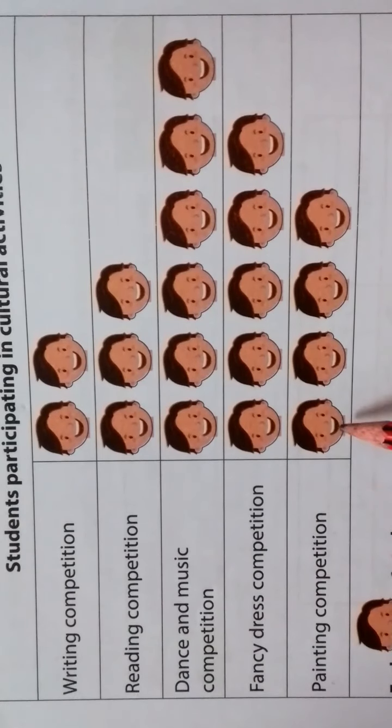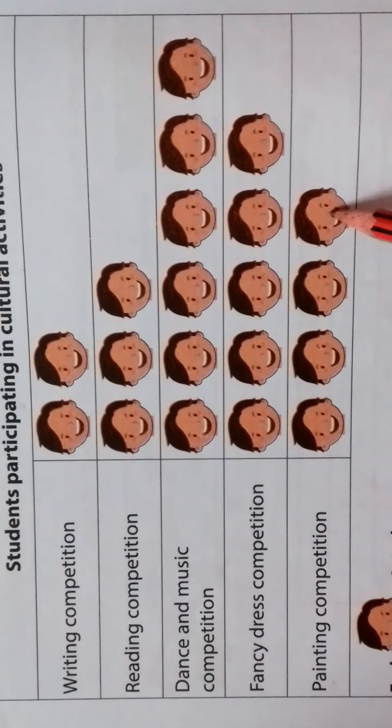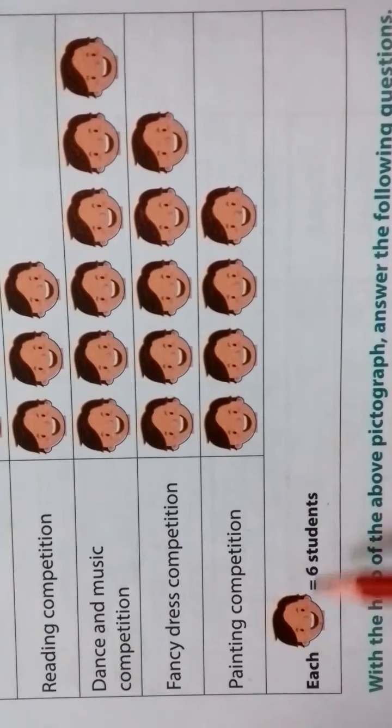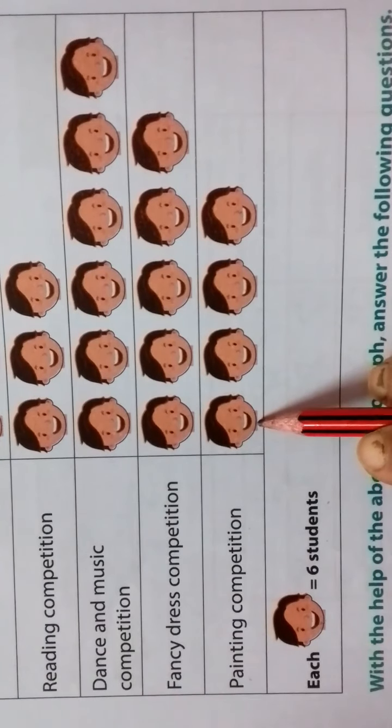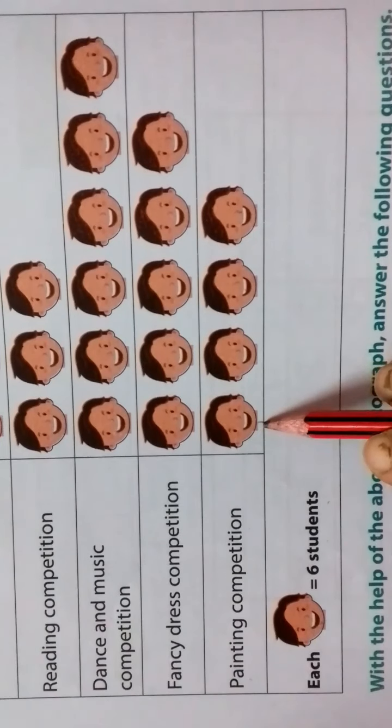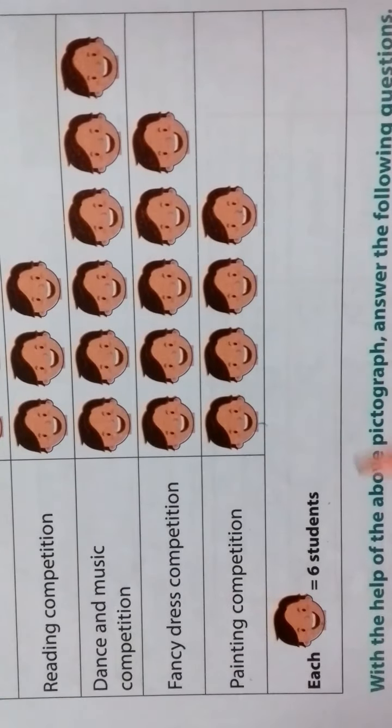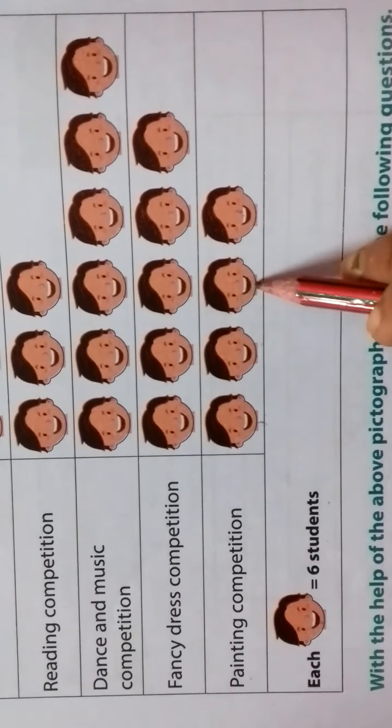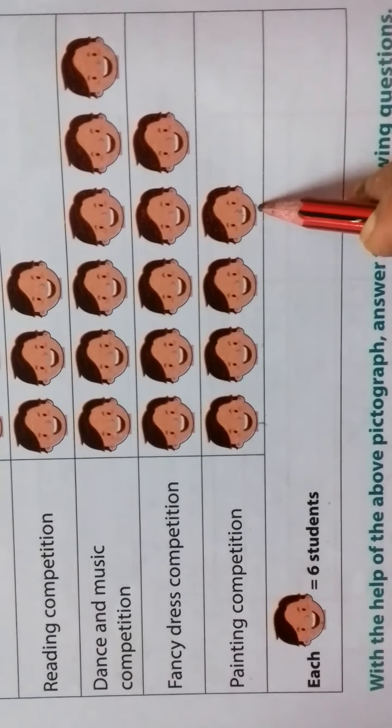At this moment, many are participating. 1, 2, 3, 4. It means that there are 4 children. However, we have found that one student is equal to 6 students. So 1 is 6 plus 6 plus 6 plus 6. So 6 plus 6 is 12, 12 plus 6 is 18, 18 plus 6 is 24.